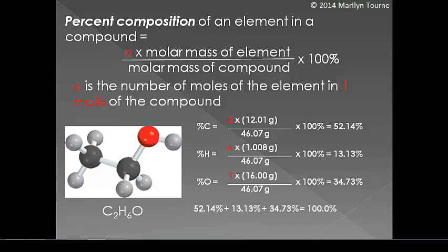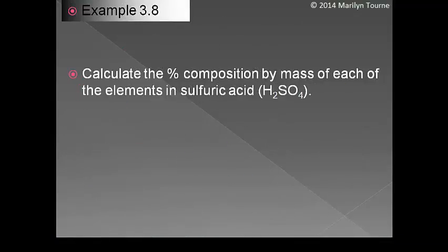Now let's try an example. Try this example on your own. This is practice exercise 3.8 in your book. Calculate the percent composition by mass of each of the elements in sulfuric acid, which happens to be H2SO4. You can find the answer in the back of your chapter. See you guys in the next video.